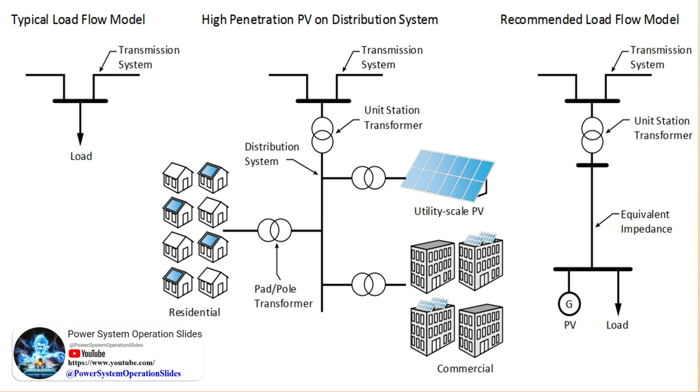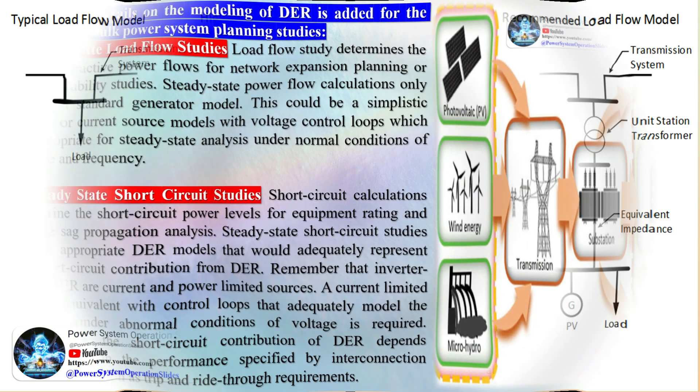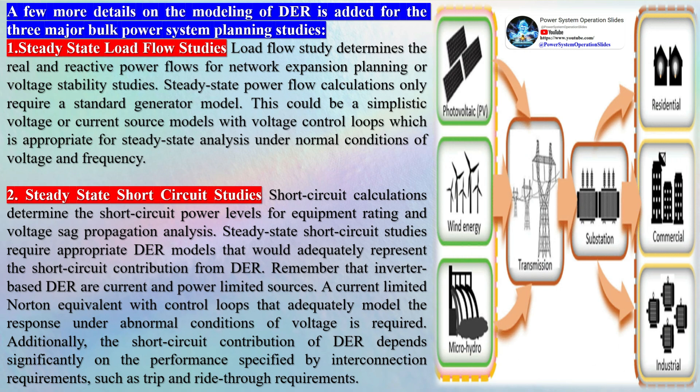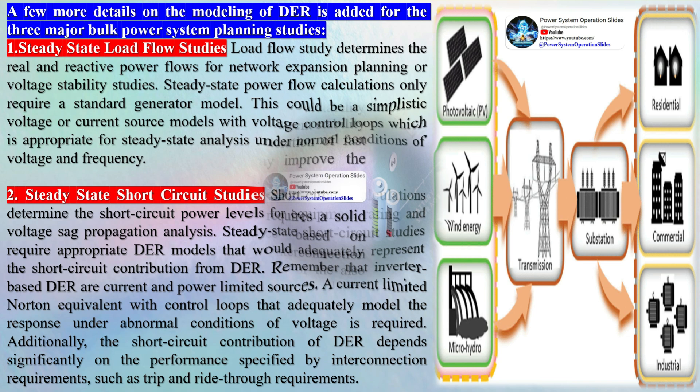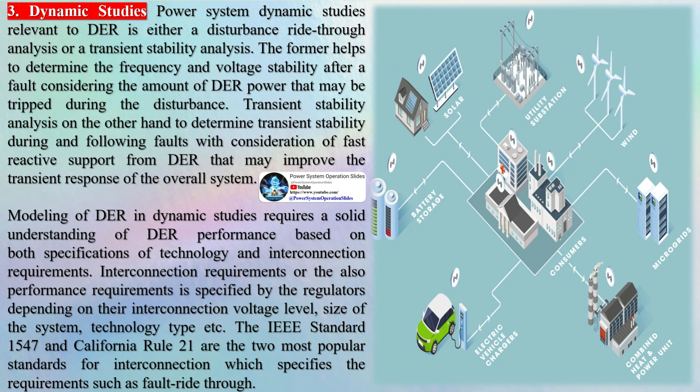Transient stability analysis determines transient stability during and following faults, with consideration of fast reactive support from DER that may improve the transient response of the overall system. From a power system operations perspective, the two most important value components are reliability and resiliency. Reliability is the ability to offer continued services, defined in terms of adequacy (enough generation to meet load) and security (ability to withstand disturbances). Resiliency augments reliability and views the grid as something more than currents and voltages. Transactive energy is a future-oriented valuation methodology — both a technical architecture and an economic dispatch system — that allows coordination of DER and enables them to be dispatched in response to price or other signals.